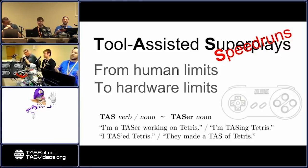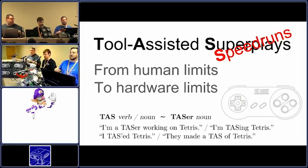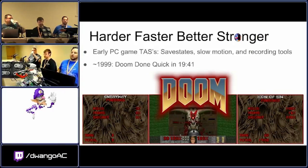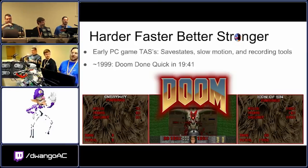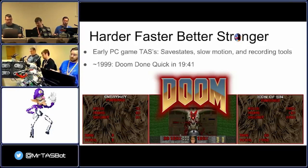A tool-assisted speedrun, or TAS — that word can be used any way you like — has an interesting lineage. It actually started all the way back in Doom. A lot of people don't remember the tools that got added in to allow things like Doom Done Quick to be done even quicker. But the idea was you'd be able to use save states, play the game in slow motion, record your progress, and make a movie file, as it was referred to.